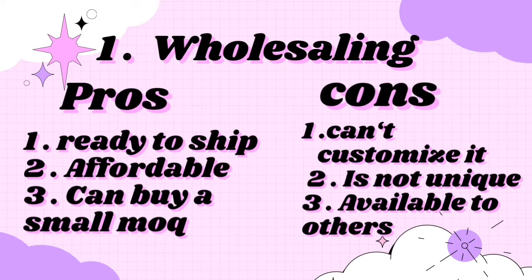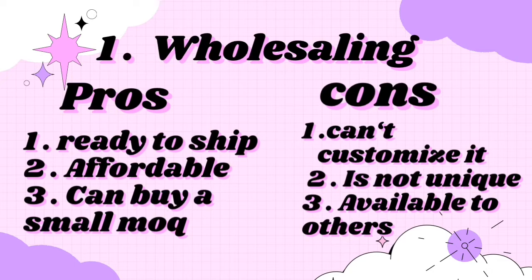The third pro is that you can buy a small MOQ — minimum order quantity — which is simply the minimum amount of palettes you have to buy. Every time you look at a supplier or vendor, you always have to check the MOQ. You can find some really low MOQs, like 5 palettes, 20, or sometimes 100. With this option, you can really just buy like 10 palettes for about $5 each, which in my opinion is a good price.